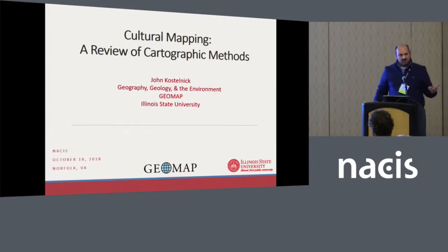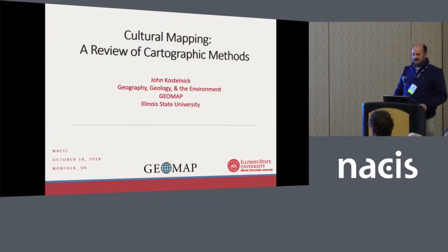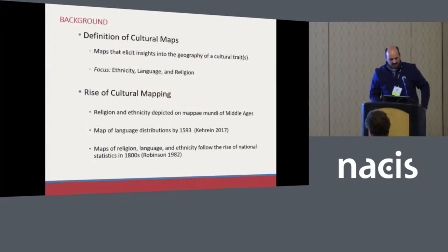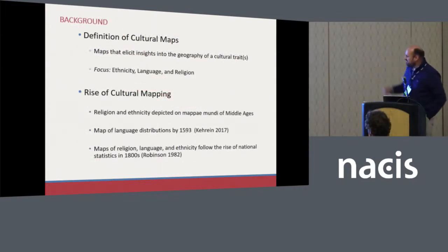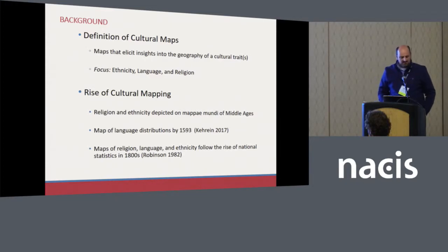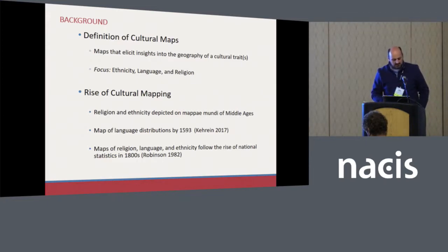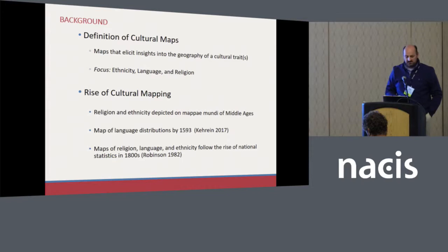As a cartographer who has a lot of interest in human geography, I've always been fascinated by what I call cultural maps. My definition of cultural maps: maps that elicit insights into the geography of some cultural trait. What I'll focus on here in particular are maps that display ethnicity, language, or religion — those three things.